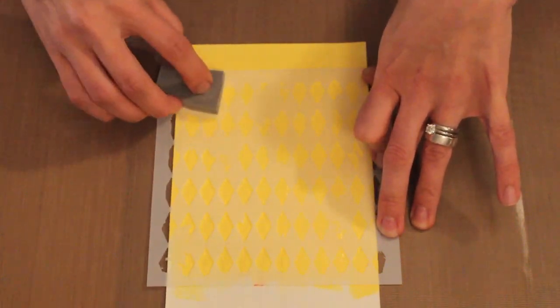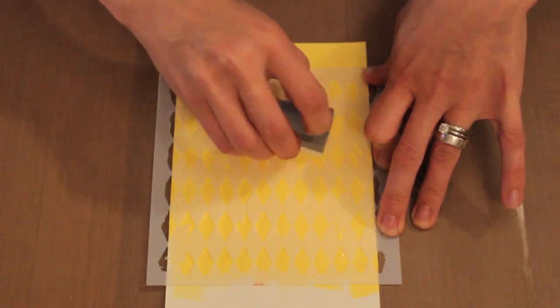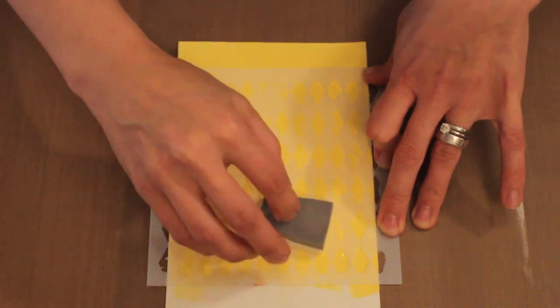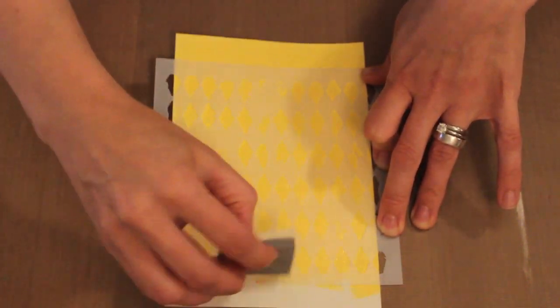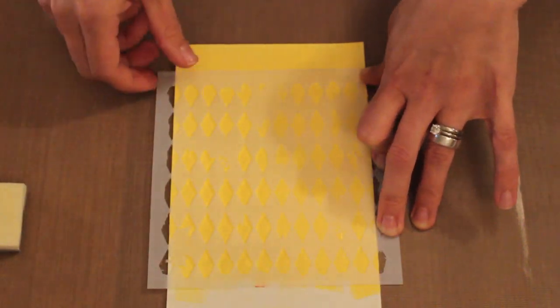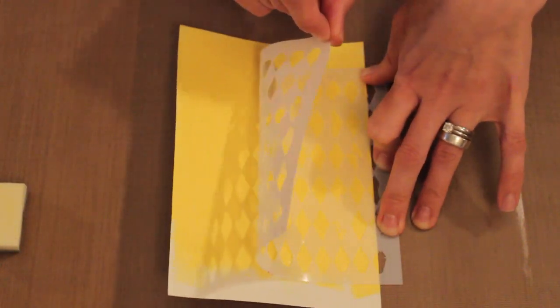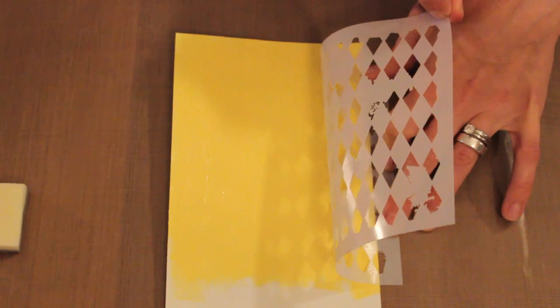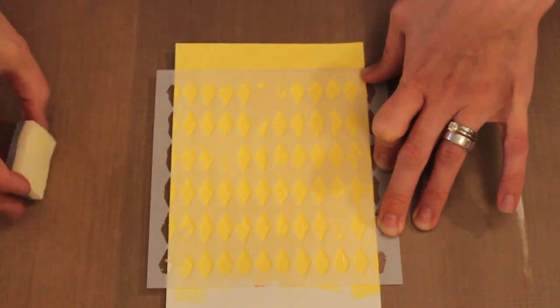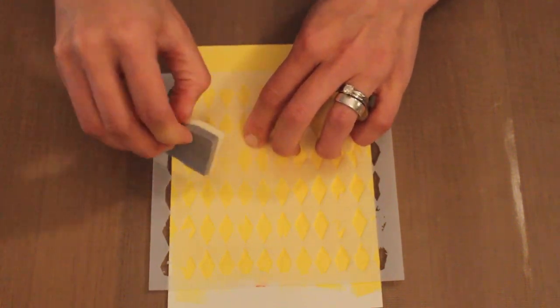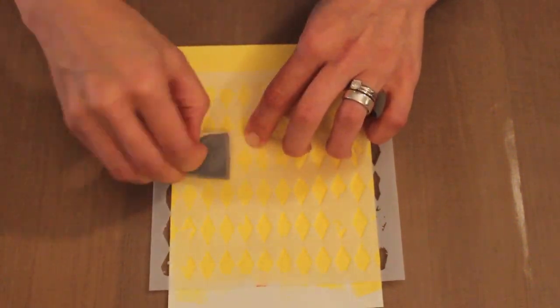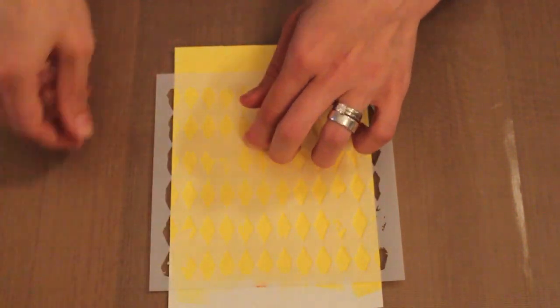The tricky part is that it's clear so it's a little bit hard to see. Once I've got this all the way around, I can lift off that stencil and make sure that I've got all of those diamonds. Some areas over here that I missed. It's very sticky stuff.